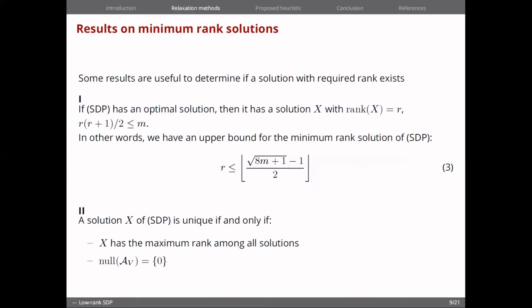These results also are helpful to get to two theorems. One is there is an upper bound on the minimum rank solution of a semidefinite program. If it is solvable, if it has an optimal solution, it verifies this upper bound number three here.